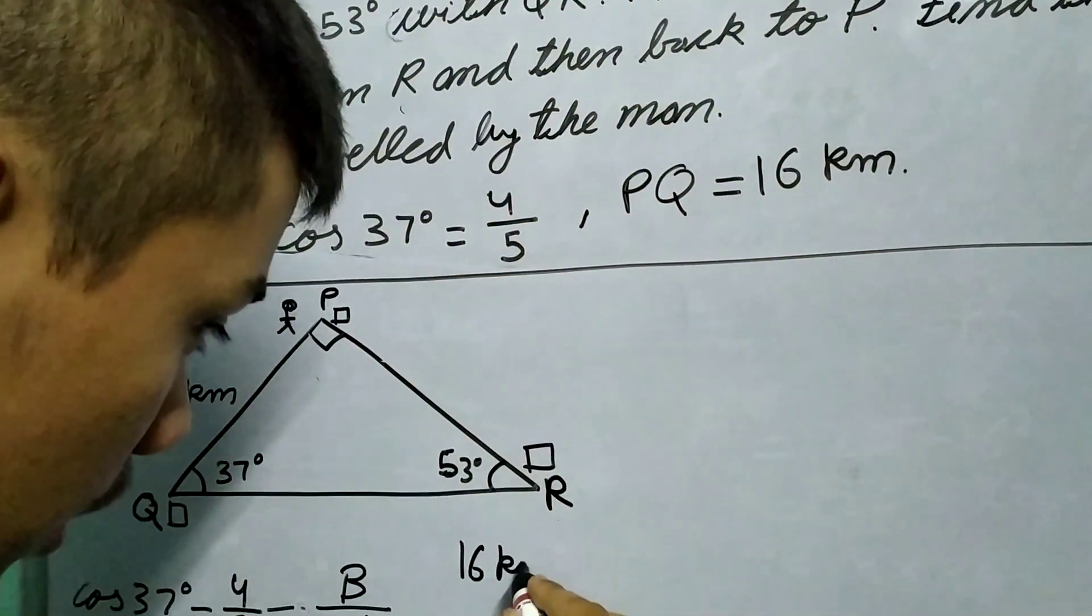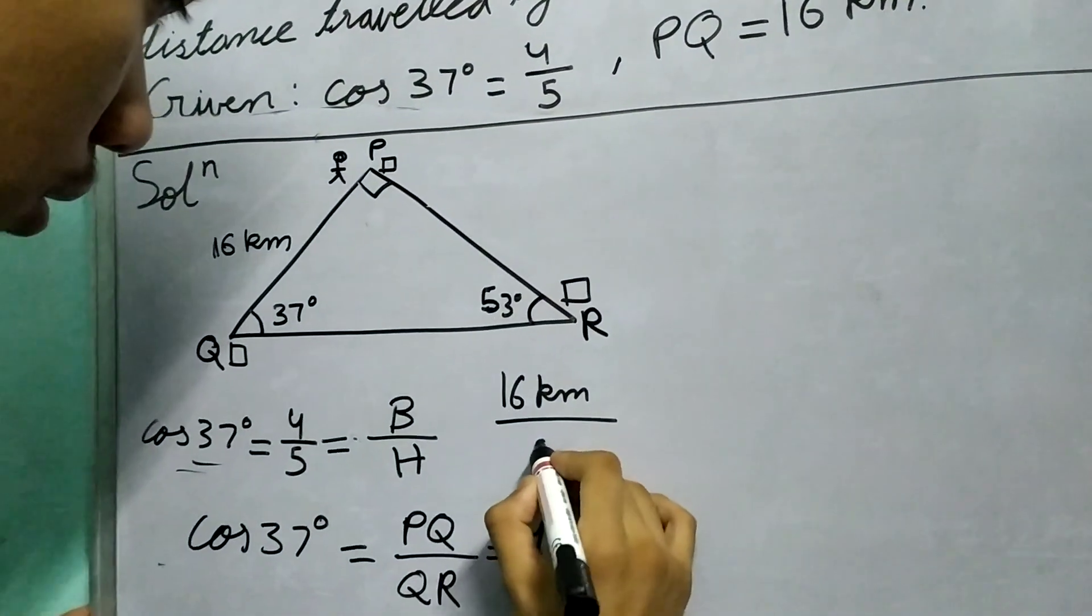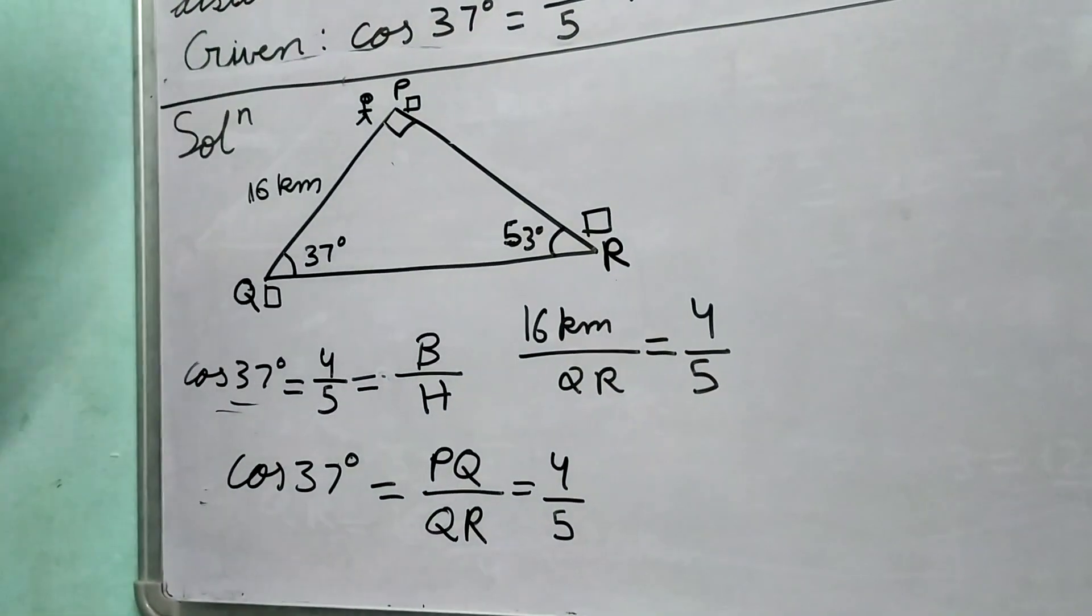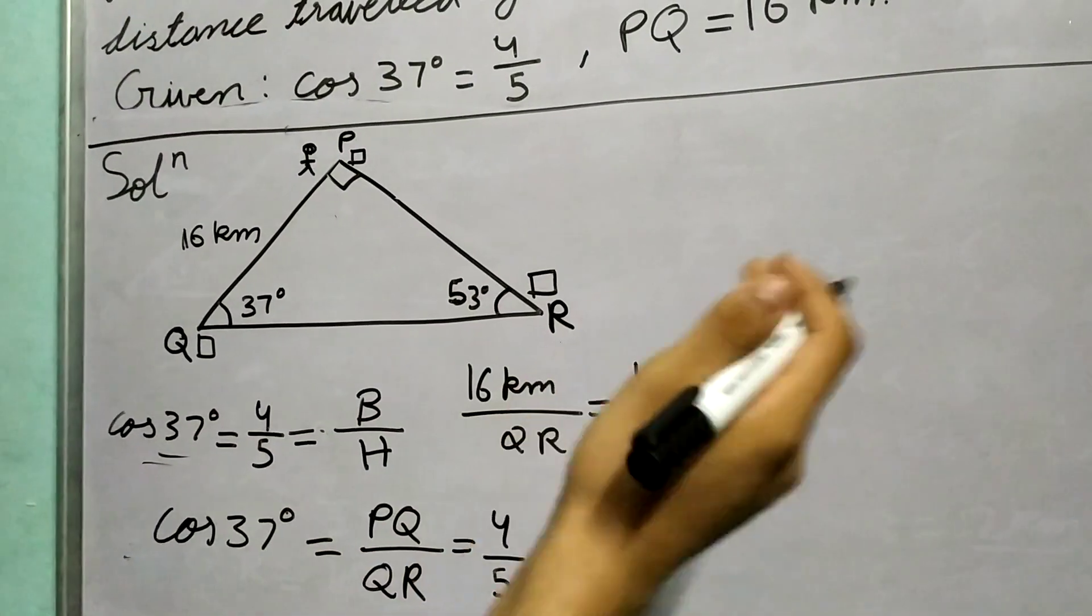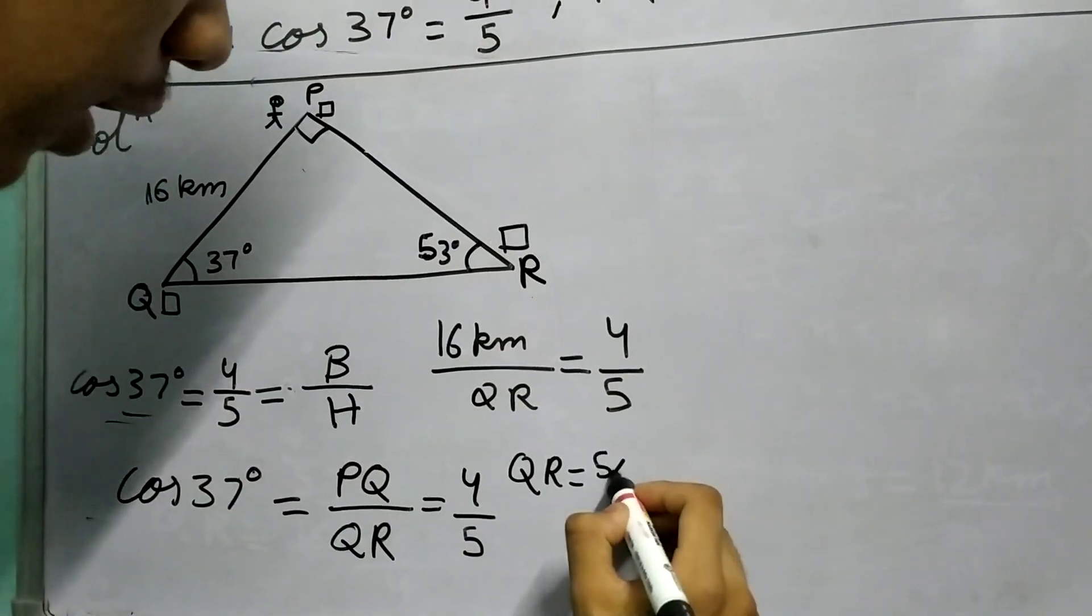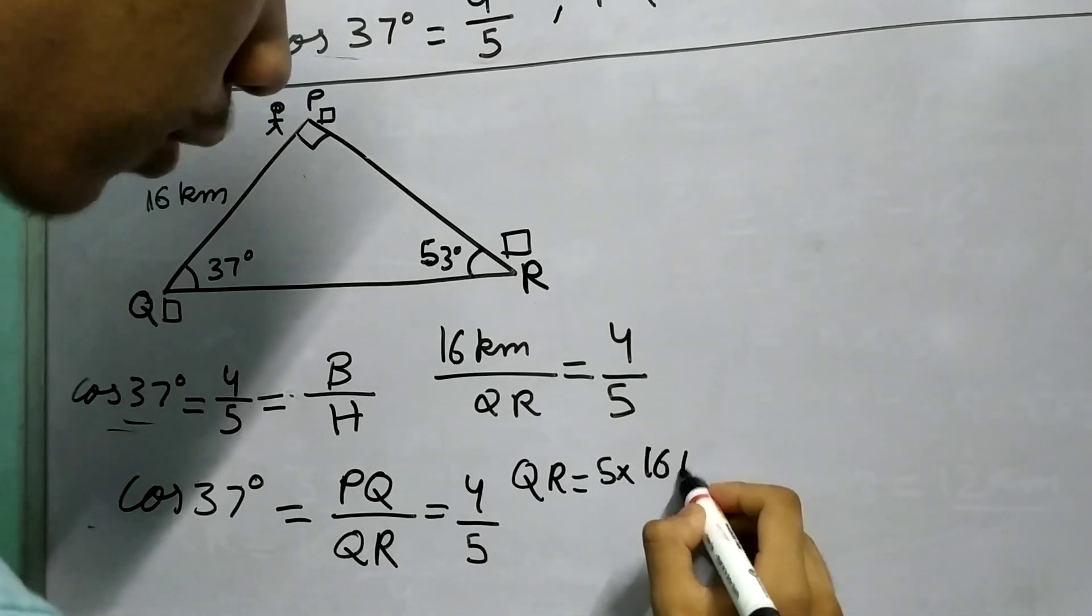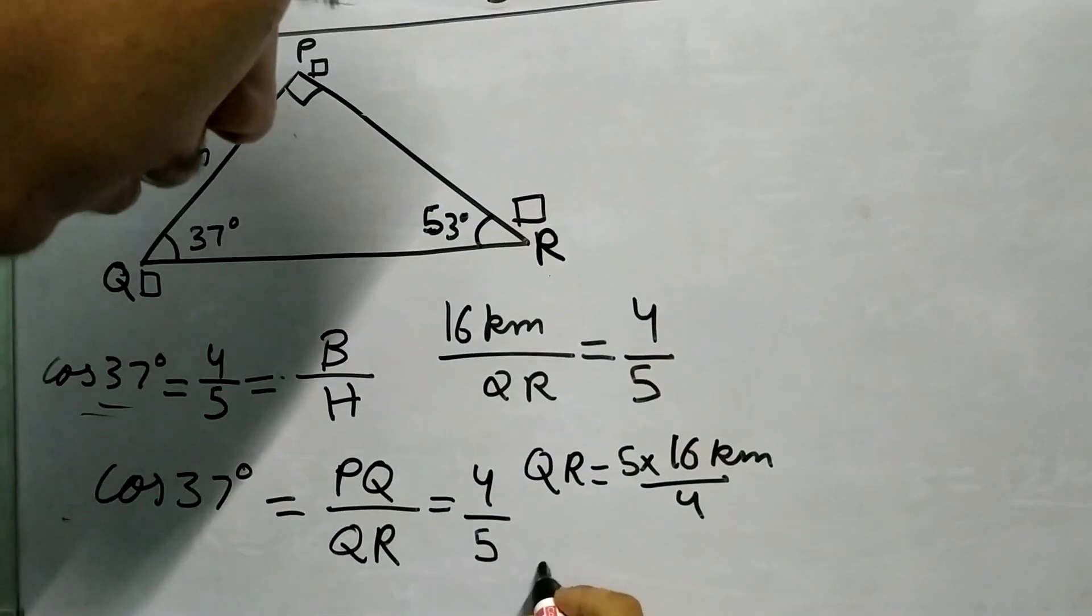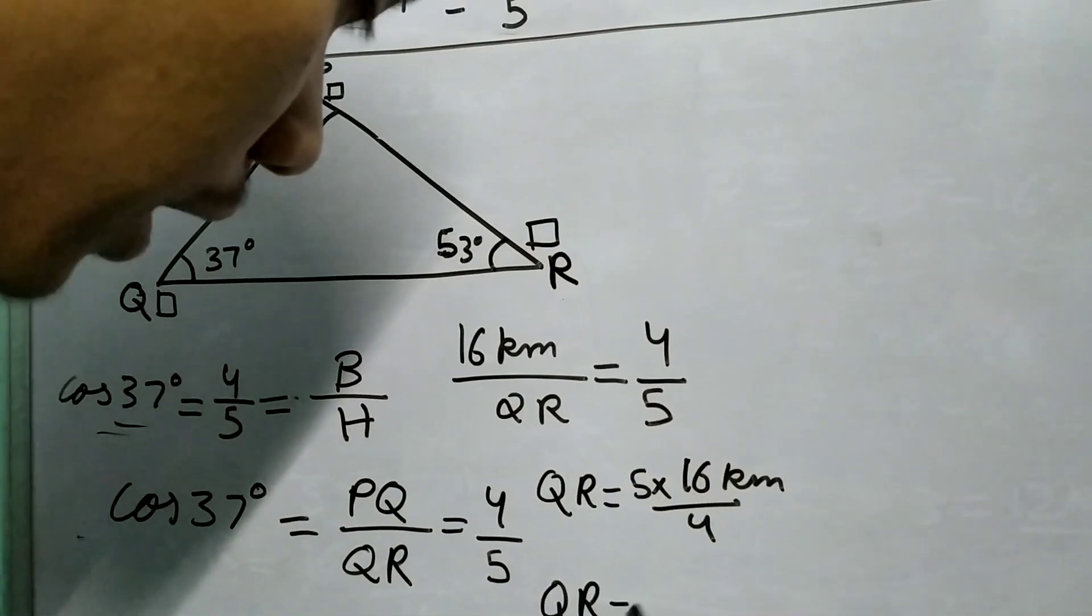Now we can solve for QR. QR will be 16 × 5 ÷ 4, which gives QR as 20 km. So this length is 20 km.